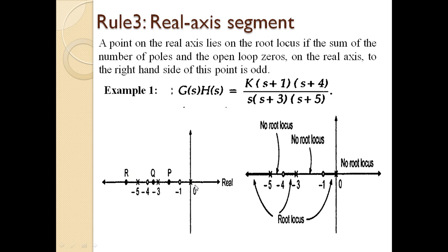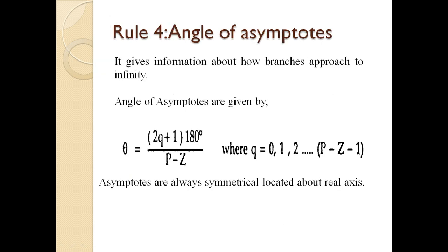Today we discuss the fourth rule: angle of asymptotes. Once we identify the number of branches, starting points, and terminating points, the next step is determining in which direction branches go to terminate at infinity. We calculate the angle of asymptotes using the formula: theta = (2q+1) × 180° / (p − z), where q varies from 0, 1, 2, ... up to (p − z − 1), and p and z are open loop poles and zeros.